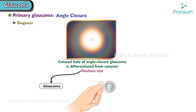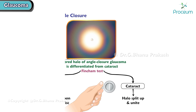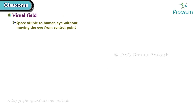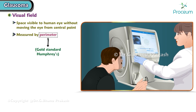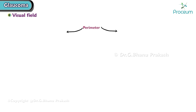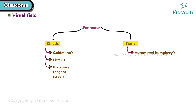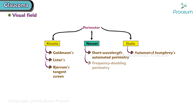In glaucoma, halos don't split upon being tested with the disc, whereas cataract halos split up and unite. Visual field is the space visible to the human eye without moving the eye from a central point. It is measured by a perimeter; the gold standard perimeter is Humphrey's perimeter. Perimeters are of two types: kinetic and static. Kinetic perimeters are Goldmann's, Lister's, and Bjerrum's tangent screen. Static perimeters are automated Humphrey's perimeter. Newer perimeters include short-wavelength automated perimetry and frequency doubling perimetry.